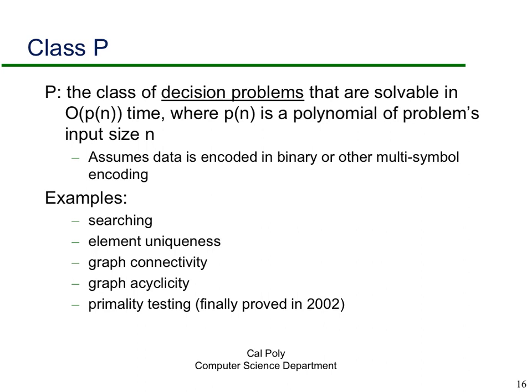First, let's review a few concepts. The class P is a class of decision problems that are solvable in polynomial time, meaning the number of instructions is a polynomial in the problem's input size. There are many problems in P that you've likely seen in an algorithms course: searching, element uniqueness in a large collection of items, graph connectivity, whether graphs are acyclic, and primality testing.